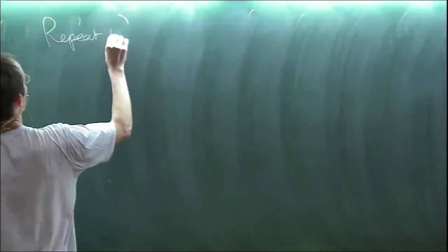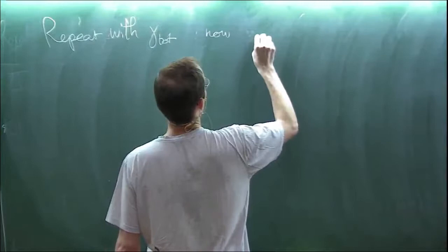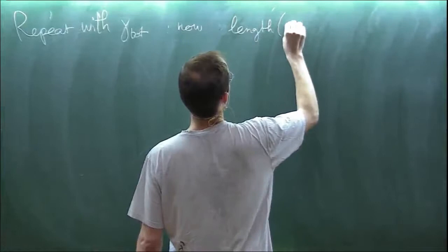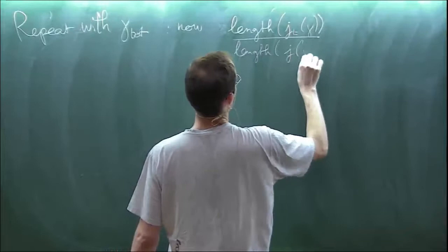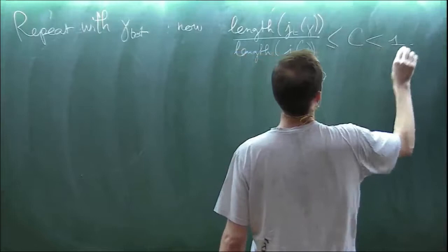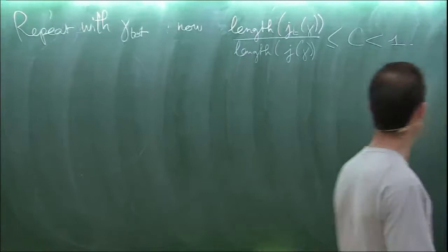So, repeat with gamma bottom, and now the lengths of J_t of gamma, of any gamma, over length of J of gamma, is bounded away from one. And, in fact, there is a theorem that if you have such a bound on the length ratios, then you can actually find a Lipschitz map that is also contracting. So, let's then use a Lipschitz extension theorem.